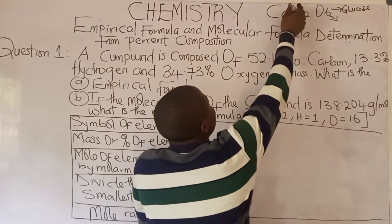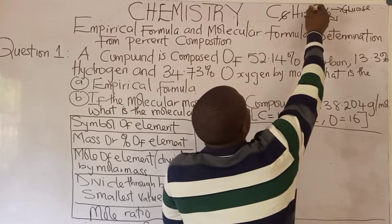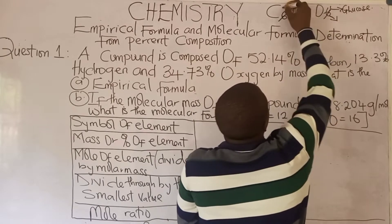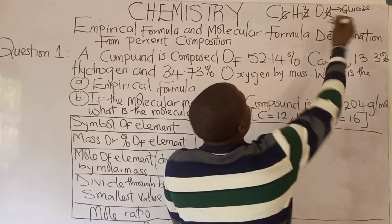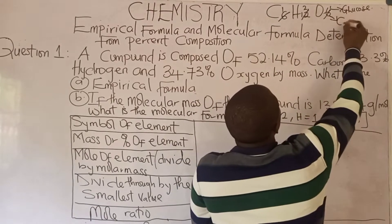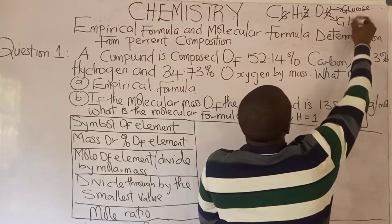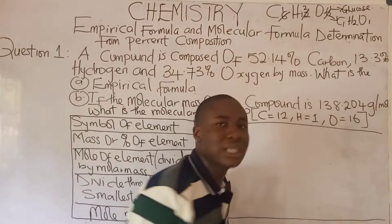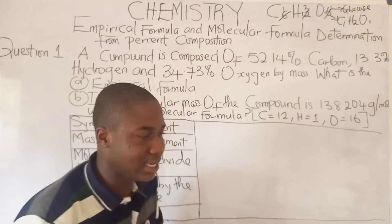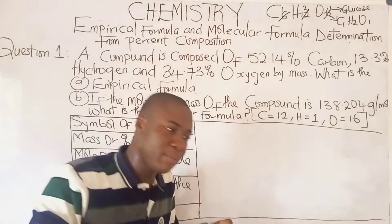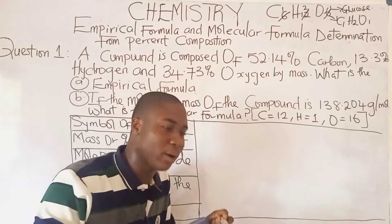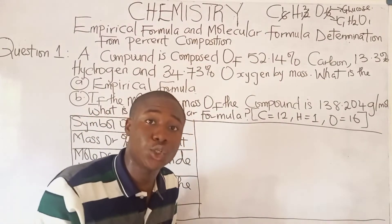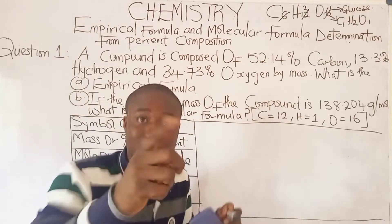We divide 6 by 6, we get 1; 12 by 6, we get 2; and 6 by 6, we get 1. So what becomes the empirical formula? It is basically C1H2O1. Empirical formula is the simplest formula of a compound, while molecular formula is the actual mole ratio of that compound.